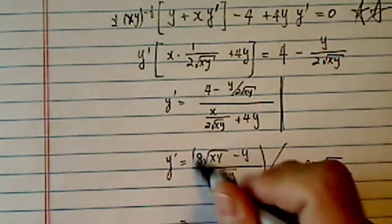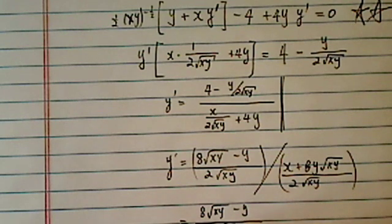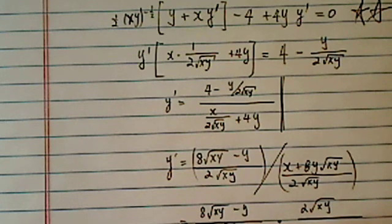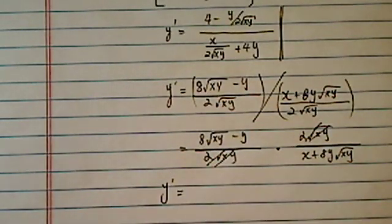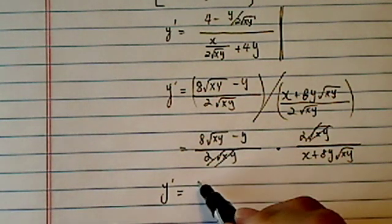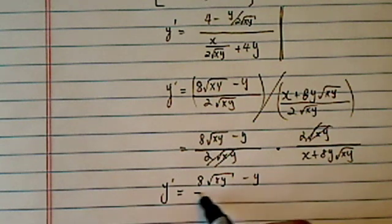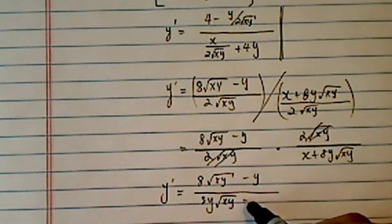It's pretty messy here, let's clean it up a little bit. 8xy minus y divided by 2 radical xy times the reciprocal, which is flipped on the bottom, that's kind of convenient. xy cancels out, and we get as clean as we can get. y prime is equal to 8 radical xy minus y divided by 8y radical xy plus x.